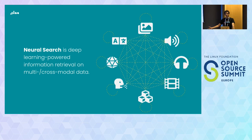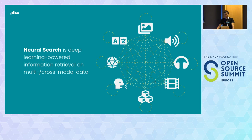Neural search is deep learning-powered information retrieval on multimodal and cross-modal data. When I say multimodal, I'm talking about image, text, audio, video, and unstructured data — every kind of data you can imagine. Neural search connects all the dots. You can stay inside the same modality and do text-to-text, but you can go beyond and do cross-modal applications. You have the data but you don't have the relationship between the data, and you infer that relationship from your model's understanding of the world.